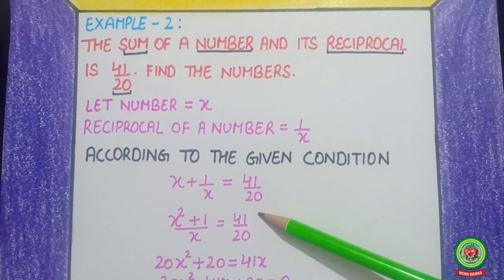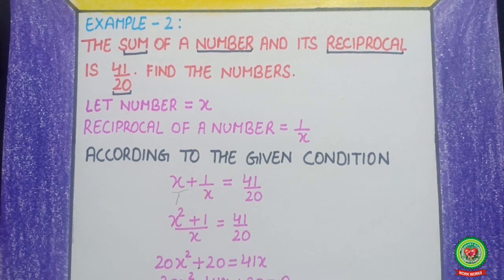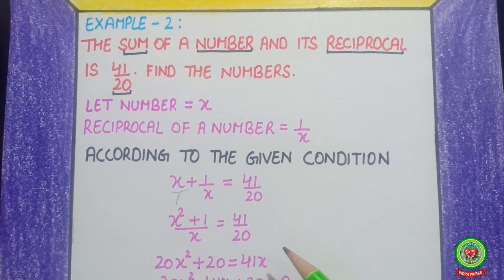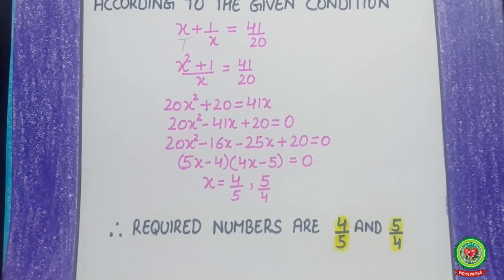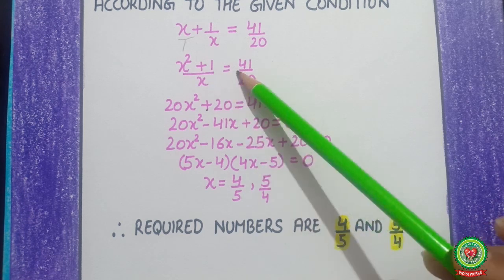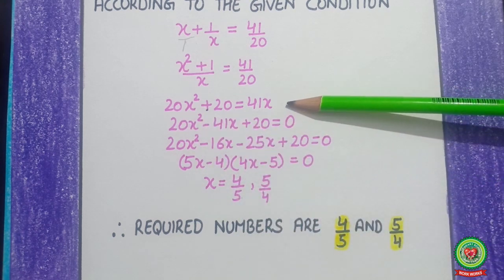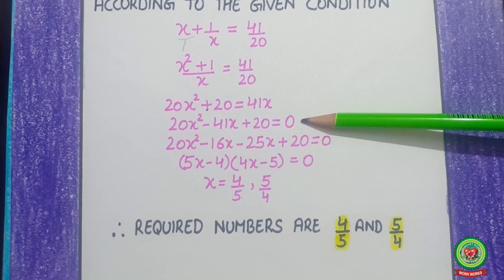After taking LCM, the equation is (x squared + 1) upon x equals 41 upon 20. Cross-multiplying gives 20x squared plus 20 equals 41x. After collecting terms, the equation is 20x squared minus 41x plus 20 equals 0.